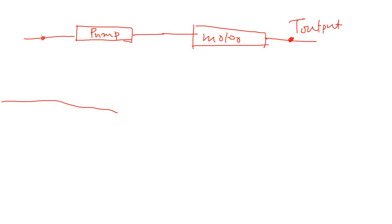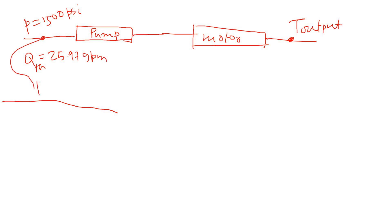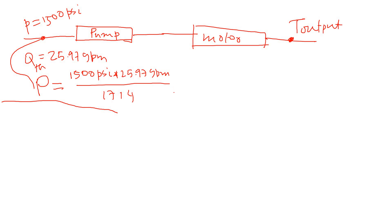We know the pressure at the pump outlet is 1500 psi, and the theoretical pump flow was calculated as 25.97 gpm. At this point, the hydraulic power P = P × Q / 1714. So P = 1500 psi × 25.97 gpm / 1714. This conversion factor gives power in horsepower, and I calculated 22.73 horsepower.